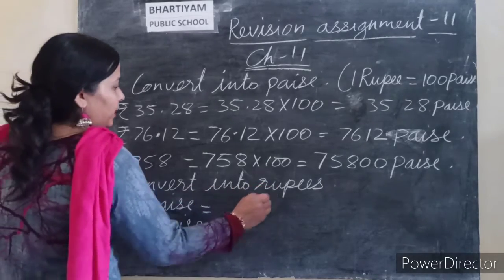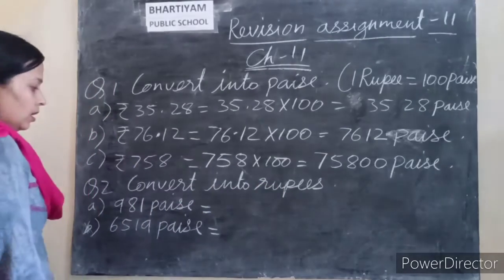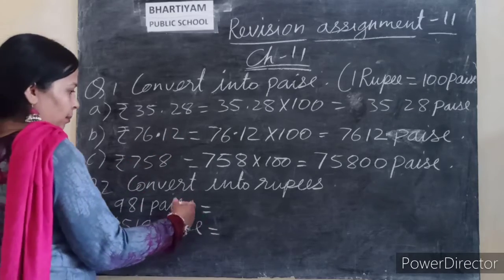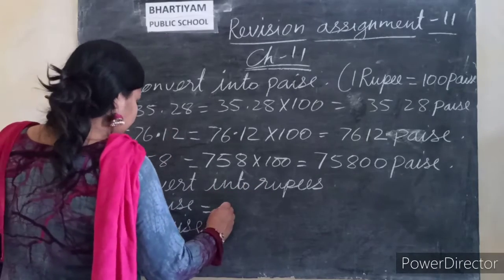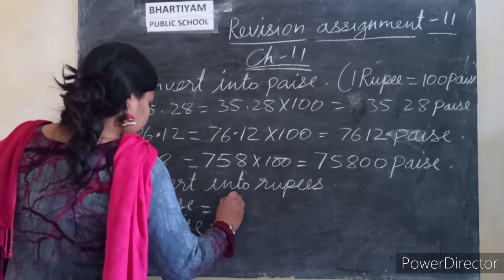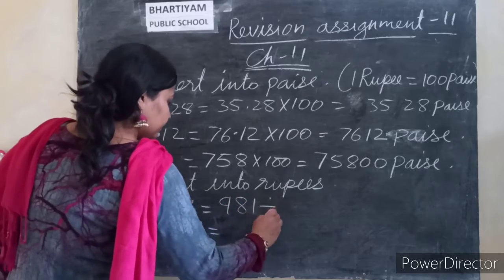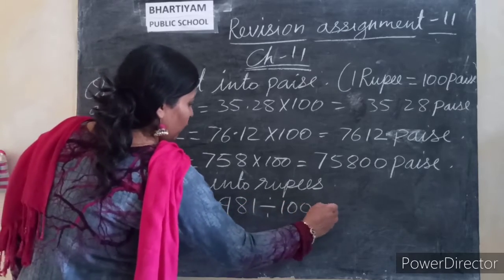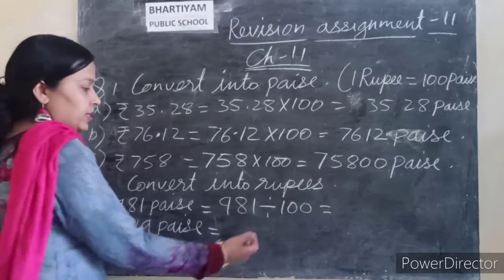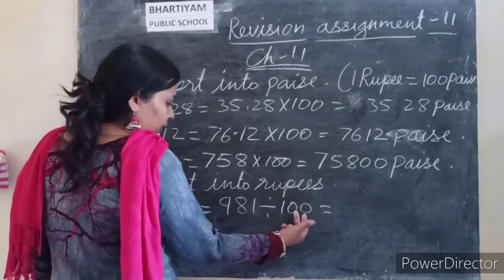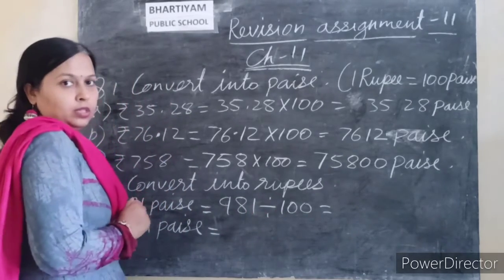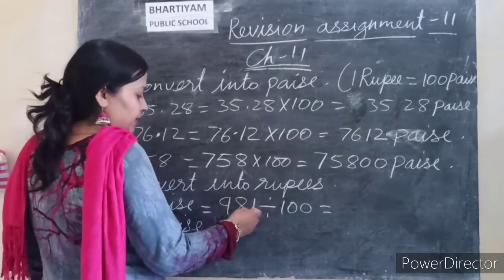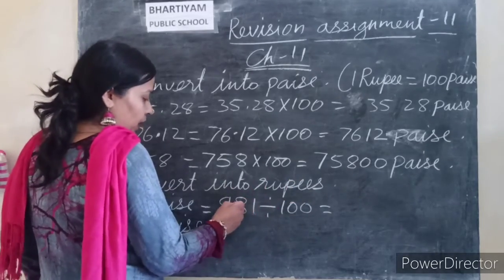Next: convert into rupees. To convert paise into rupees, we divide the number by 100. Count two digits from the right and place the decimal point there.